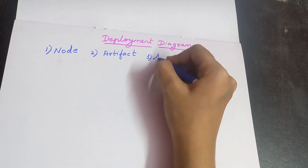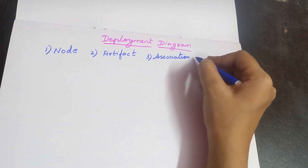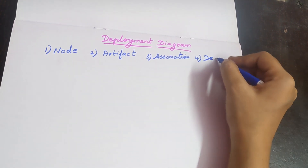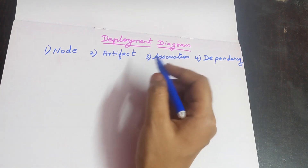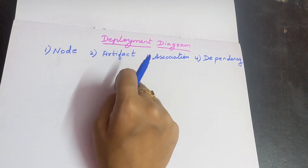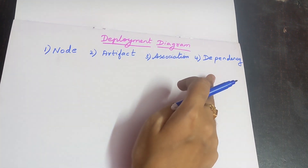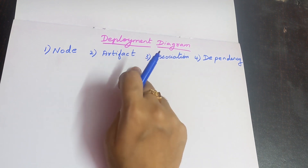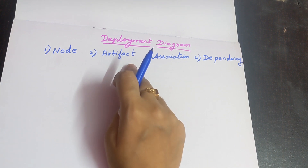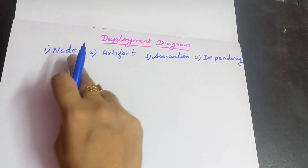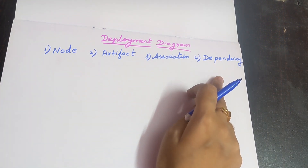The other symbols are association and dependency. So totally there are four symbols required in drawing a deployment diagram: node, artifact, association, and dependency. Among these four, the most important symbols are node and artifact. If you know how to draw node and artifact, you can easily use association and dependency in the diagram.